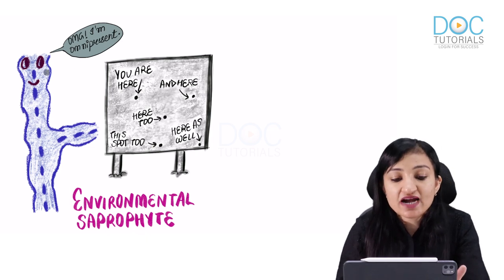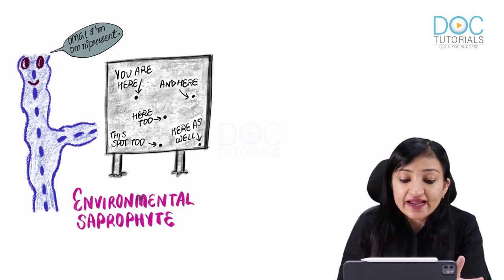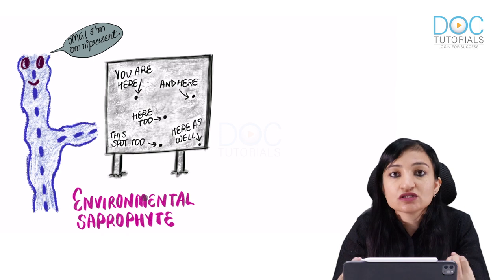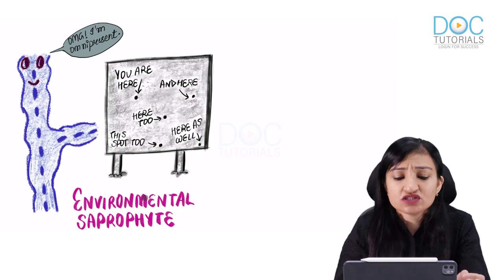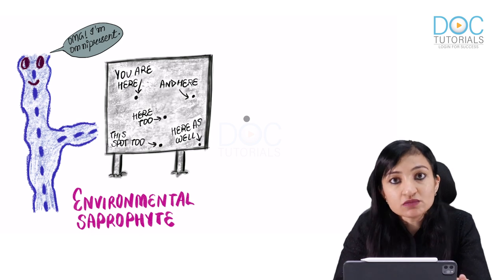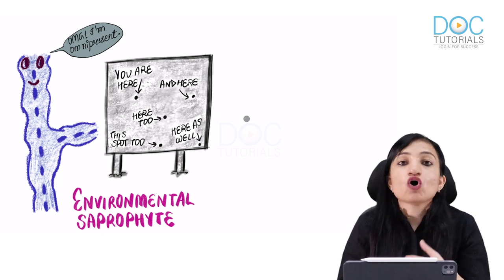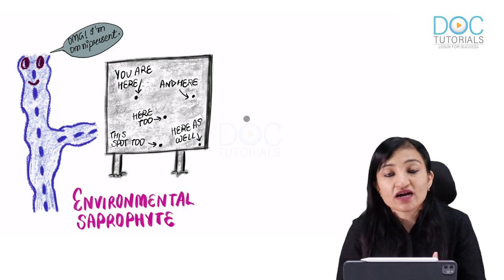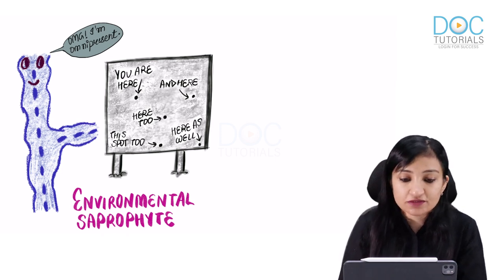This fungus is omnipresent — it's an environmental saprophyte. It's present in the soil, spores are prevalent in the air, on decaying vegetation. When it is everywhere, it is bound to infect humans and animals. But if immunity is good, this fungus is harmless. Problems occur when it gets an opportunity in the form of a risk factor, causing serious diseases — we can even lose the patient if timely treatment is not done.